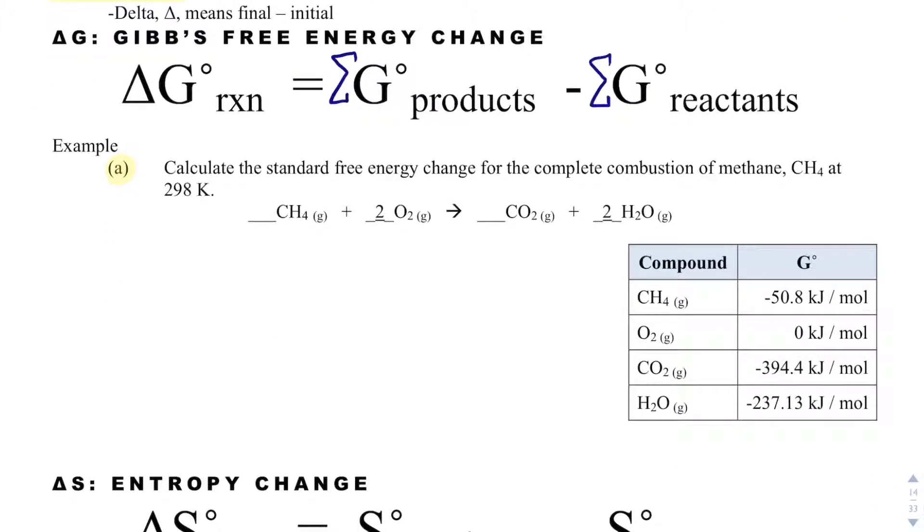We're given the combustion of methane, and what I want to do is calculate the standard free energy change, or the delta G, for this reaction. And since we're at 298 Kelvin, this will be delta G naught. And so my formula is delta G naught equals the sum of my G's for my products minus the sum of my G's for my reactants. And of course, there's lots of delta G formulas, but we're forced to use this one here because we're given this table.